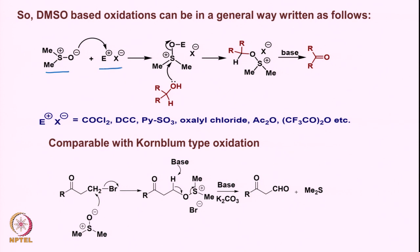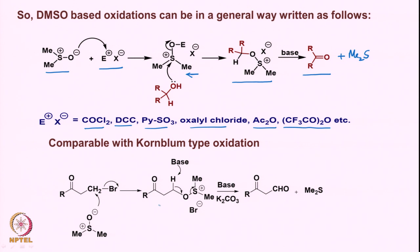This leads to an intermediate to which the alcohol attacks and forms a second intermediate, from where the aldehyde or ketone is released along with dimethyl sulfide. So essentially, whether EX is phosgene, DCC, pyridine·SO₃, oxalyl chloride, acetic anhydride, trifluoroacetic anhydride, or any other electrophile, the intermediate is comparable with the Kornblum-type oxidation — the crucial intermediate that undergoes loss of proton and dimethyl sulfide to form the carbonyl group.